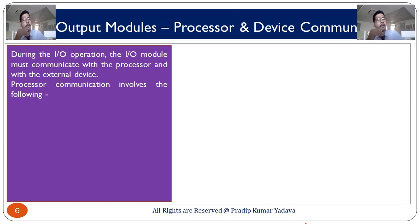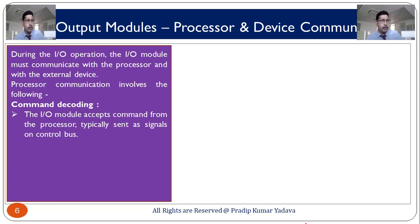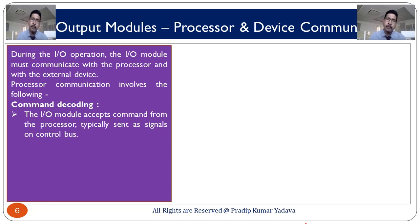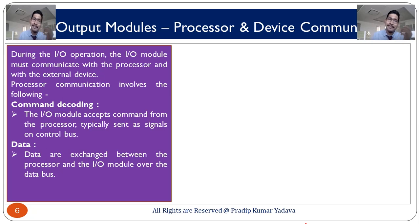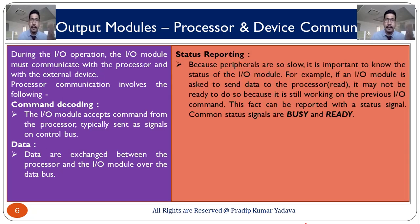Now talking about processor and device communication: during the input-output operation, the input-output module must communicate with both the processor and the external device. The input-output model accepts commands from the processor, typically sent as signals on the control bus. Data are exchanged between the processor and input-output model over the data bus. So, the data bus is used to exchange data, the control bus is used to pass signals, and the address bus is used to carry addresses.